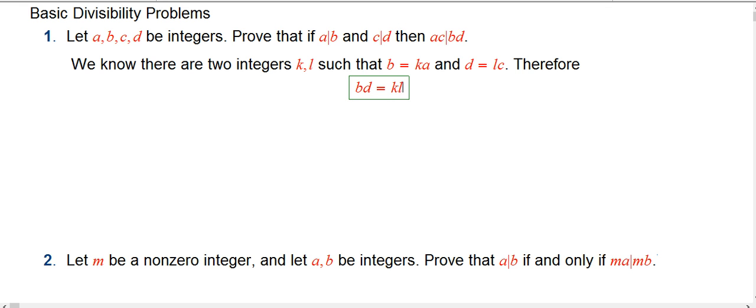Okay, so BD is therefore, well, let me be a little excruciatingly explicit here. It's KA times LC, but of course, multiplication is commutative and associative, so we can regroup that as KL times AC. Hey, guess what?